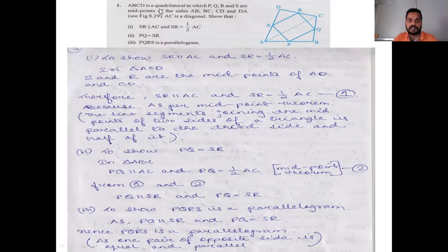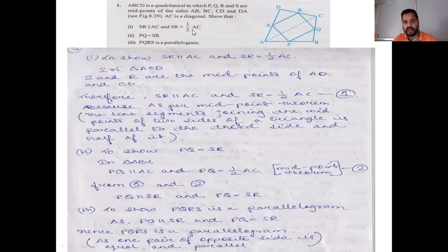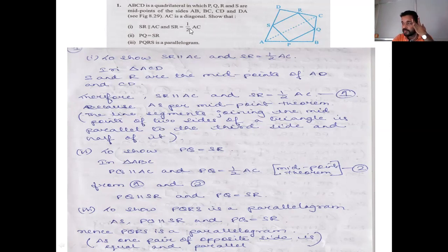Question 1: ABCD is a quadrilateral in which PQRS are the midpoints of sides AB, BC, CD and DA. AC is a diagonal. Show that SR is parallel to AC and SR is equal to half of AC. Note that the first theorem also states the joining line is half of the third side.